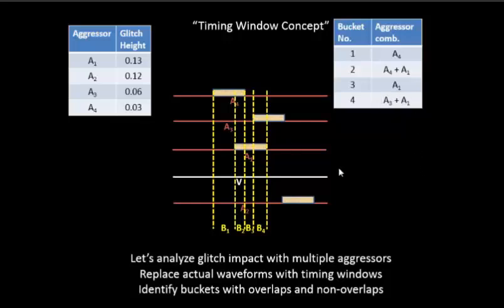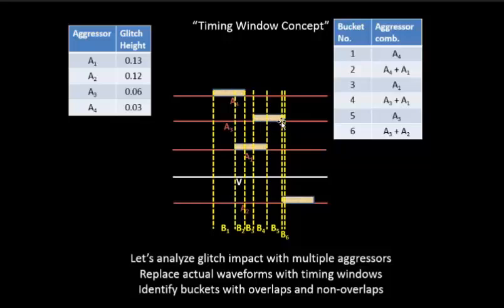During this particular bucket, the next bucket will start from this point and end over here because there is a new switching activity that is getting started. Similarly, the next bucket will start from this point and end over here because the existing switching activity is getting completed at this point.